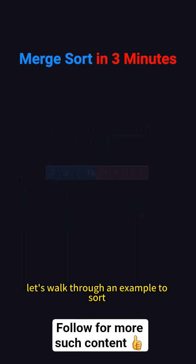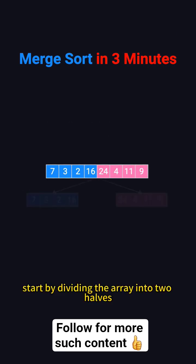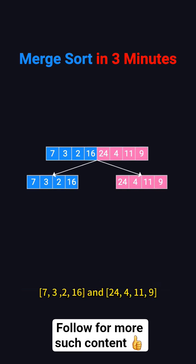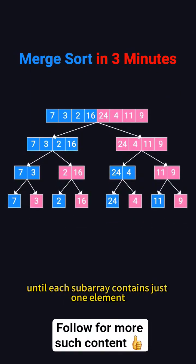Let's walk through an example to sort 7, 3, 2, 16, 24, 4, 11, 9 using Merge Sort. Start by dividing the array into two halves: 7, 3, 2, 16 and 24, 4, 11, 9. Continue splitting until each subarray contains just one element.